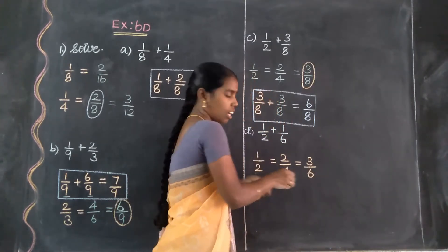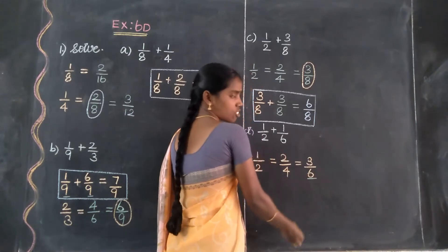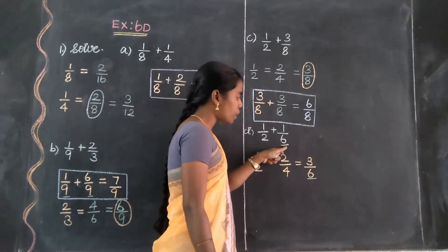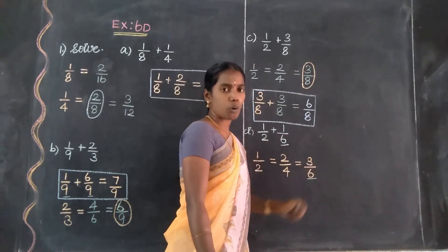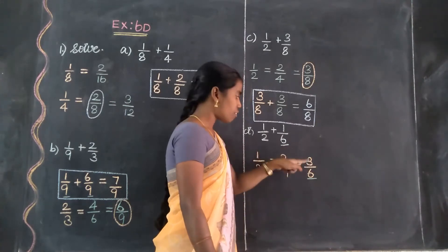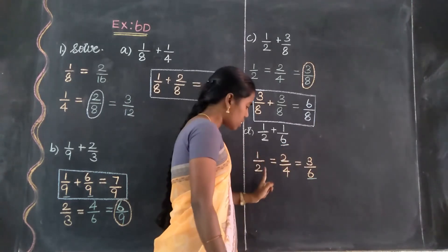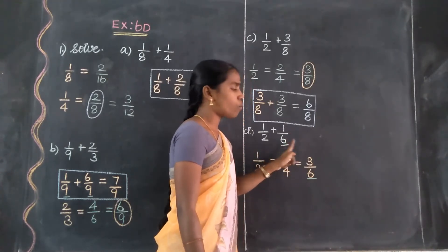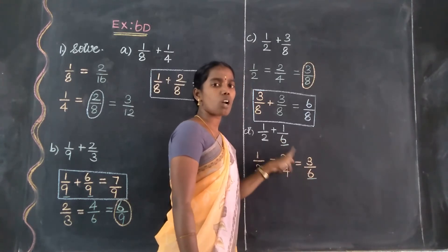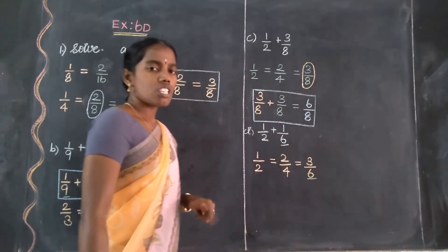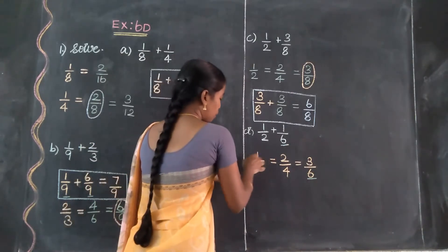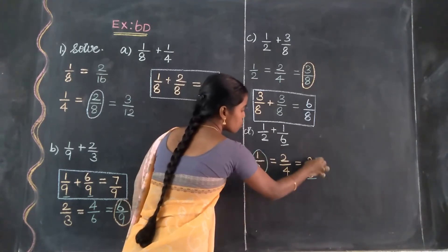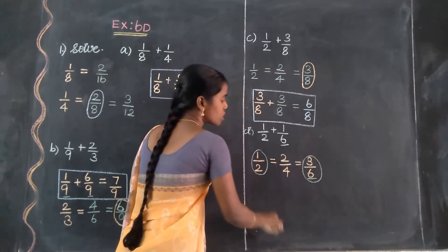We stop here. Why? Because the second fraction's denominator value is 6, and the denominator has now also become equal to 6. So we stop. Substitute: 1 by 2 is equal to 3 by 6. All the equivalent values confirm that 1 by 2 equals 3 by 6.